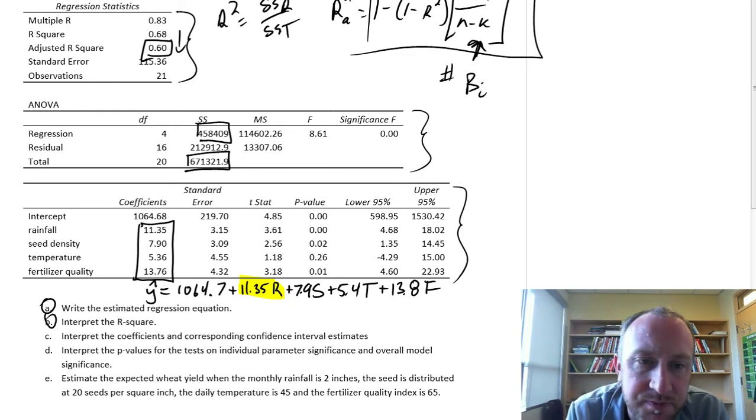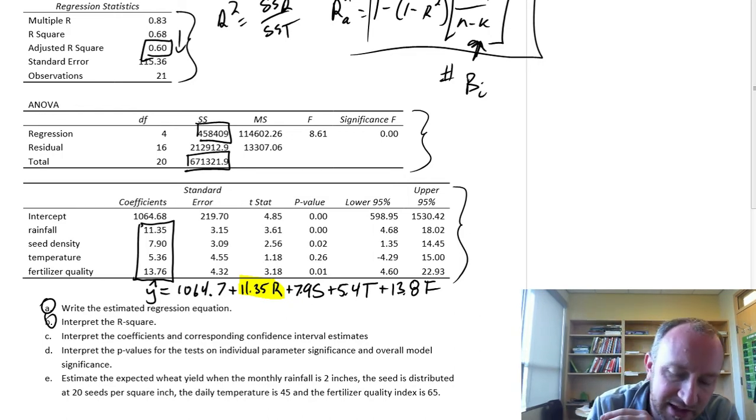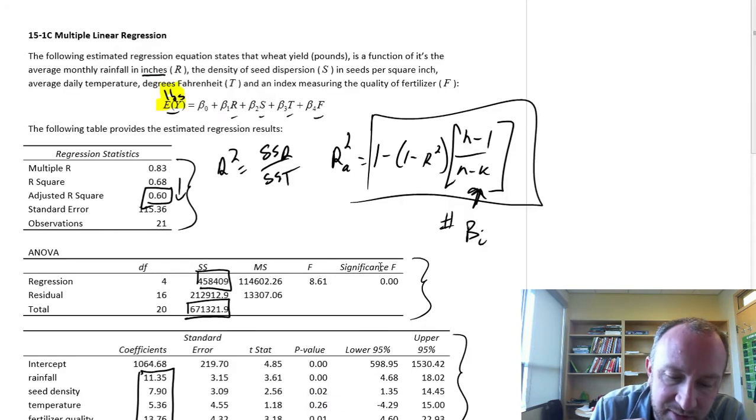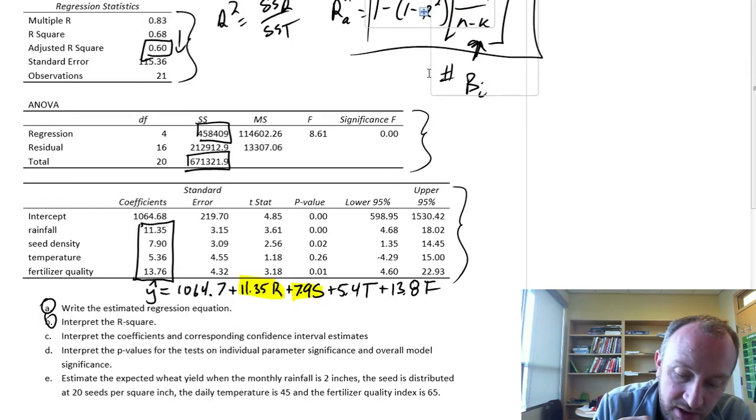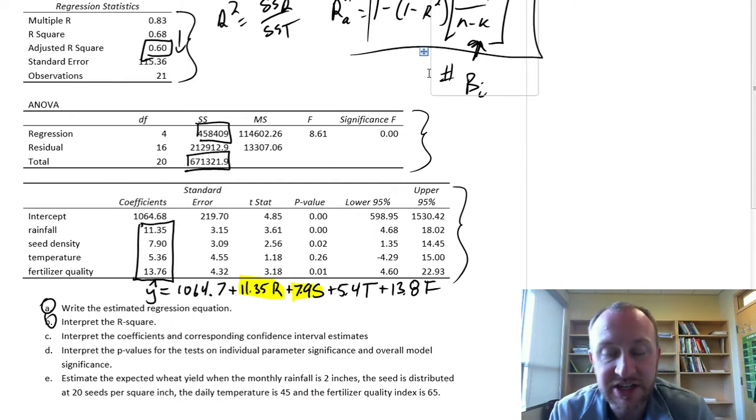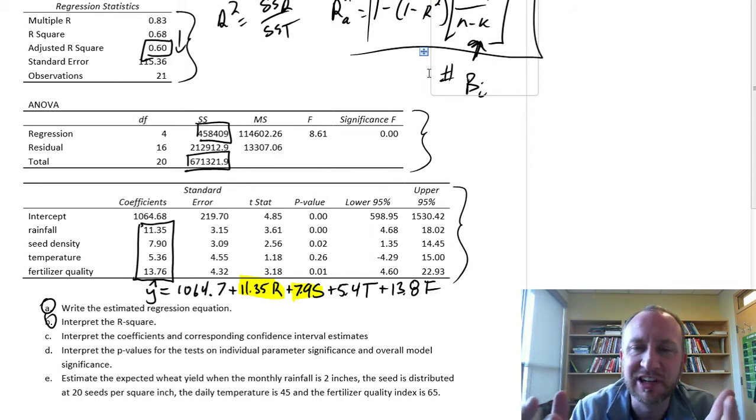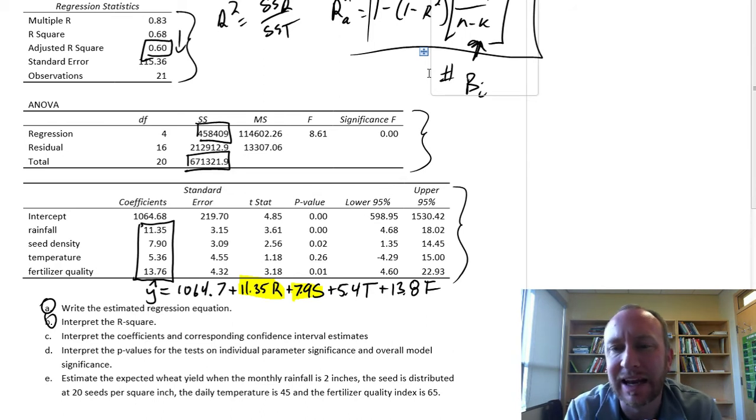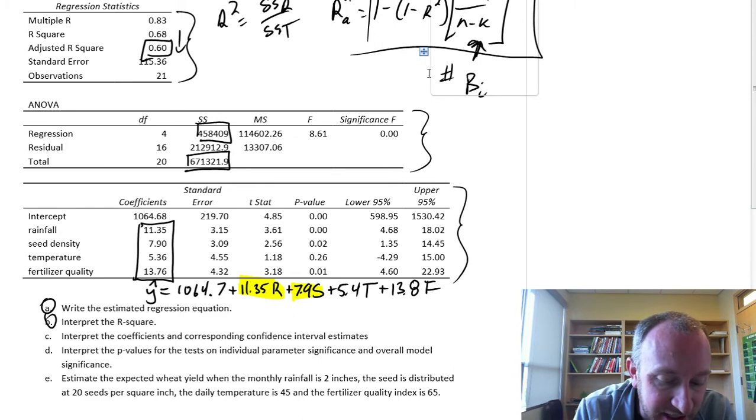These are all estimates of an average. If we look at the seed density, seed density is measured in terms of seeds per square inch. For each additional seed per square inch, we see an increase of 7.9 pounds of wheat, on average.